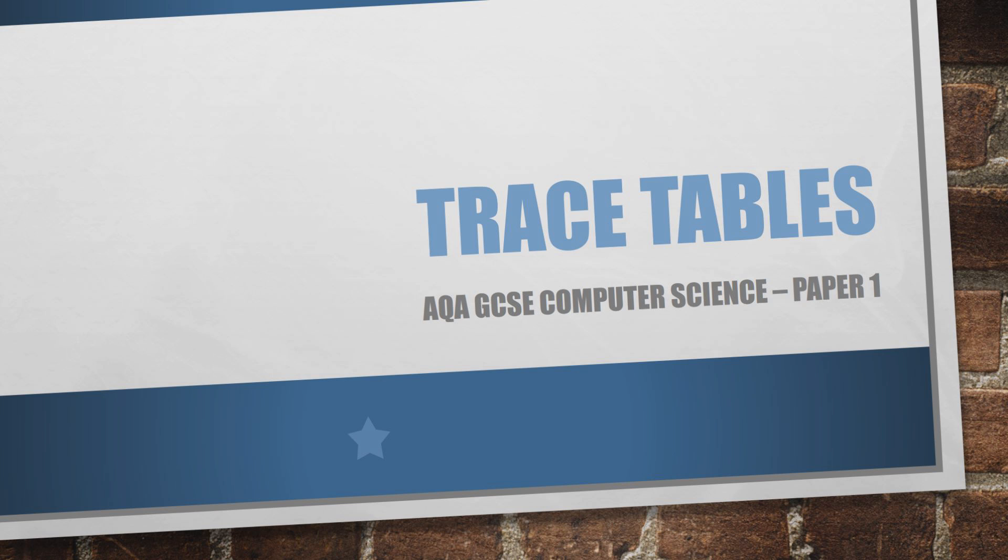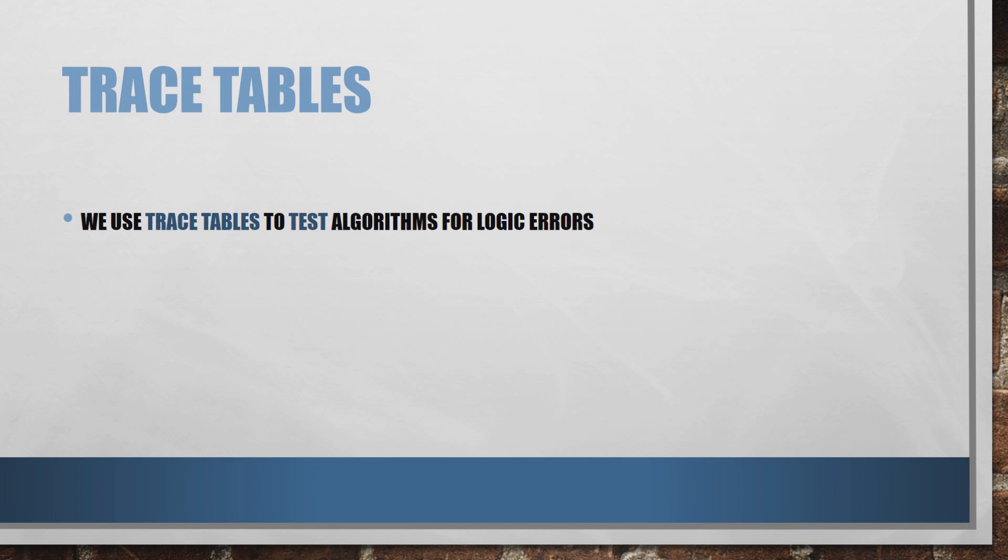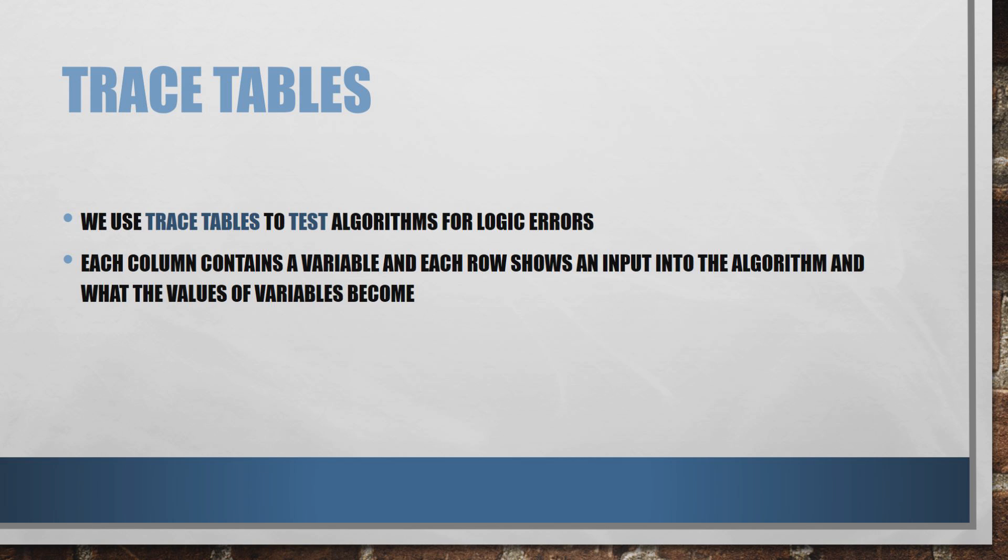Today we're looking at trace tables. We use trace tables to test our algorithms for errors of logic. In a trace table, each column contains a variable and each row shows us an input into the algorithm and what the values of those variables should become.